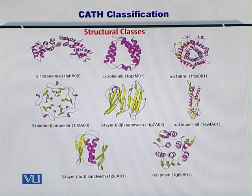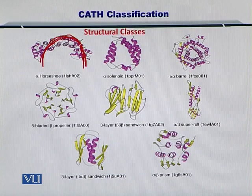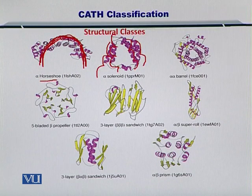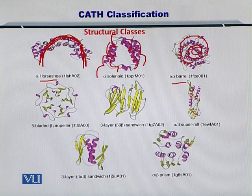Here you have the alpha helix horseshoe, which is constituted of alpha helices only and shaped like a horseshoe. Then you have the alpha solenoid, where lots of alpha helices are organized like a solenoid or a spring. And then you have the alpha-alpha barrel, where the entire structure is organized by alpha helices in the form of a barrel.